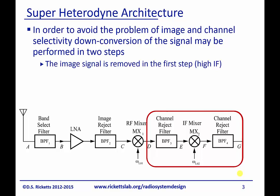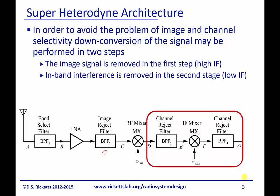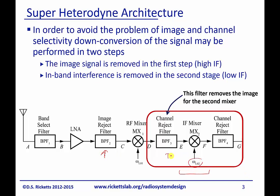The image signal is removed by the first step here. And the in-band interference is removed by the second stage down here. Every time we're doing a down conversion, we're always going to have this problem of an image. So even though we remove one image here, when we do this down conversion, there's another image up here that we may want to also reduce.